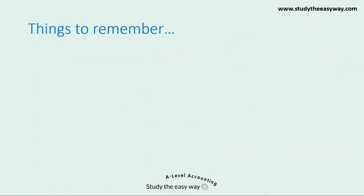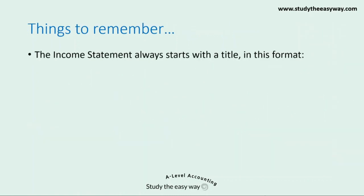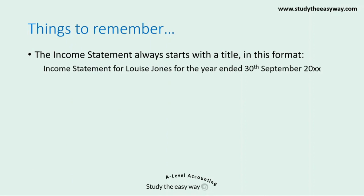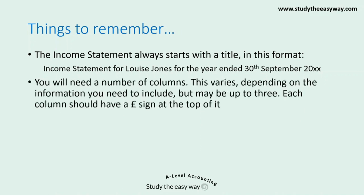Some things to remember before we start. Firstly, the income statement always starts with a title in this format: 'Income statement for' and then the name of the business — in this case Louise Jones — 'for the year ended' and then the date which represents the end of the business's financial year. You'll need a number of columns in your income statement. This varies depending on the information you need to include, but it may be up to three columns.